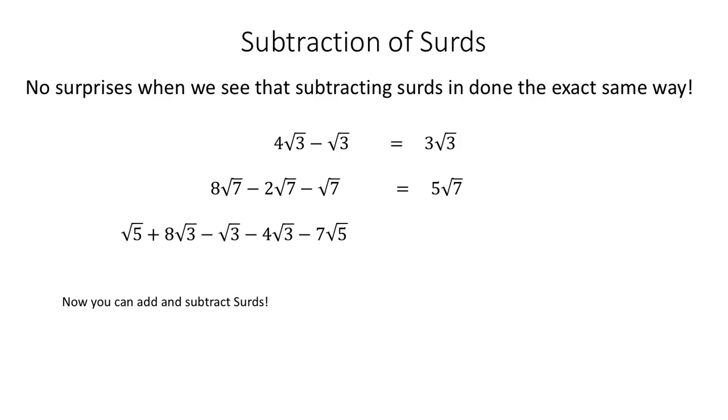This last one here, I've got a mixture of root 3s and root 5s. So 8 root 3, take away a root 3, leaves 7 root 3, take away a 4 root 3, leaves me 3 root 3. Root 5, take away 7 root 5, leaves me a negative 6 root 5. So we can see the answer there is going to be 3 root 3, take away 6 root 5.